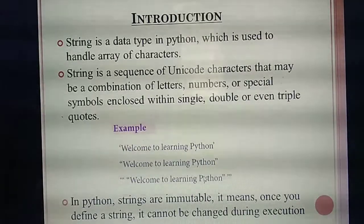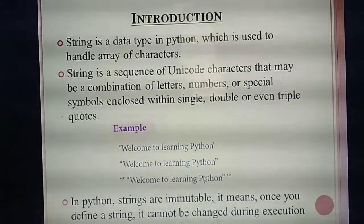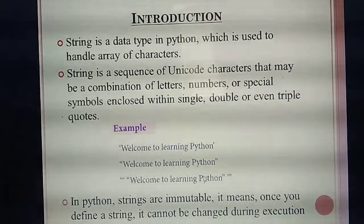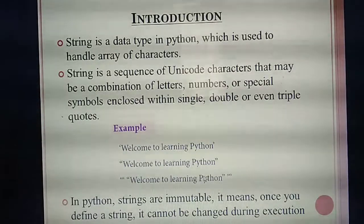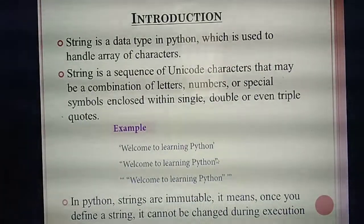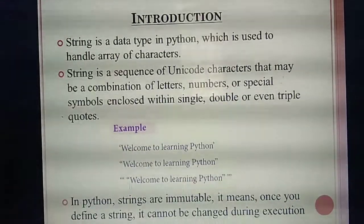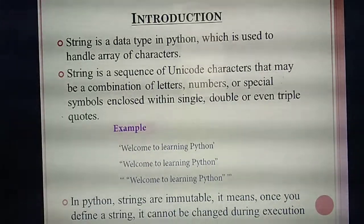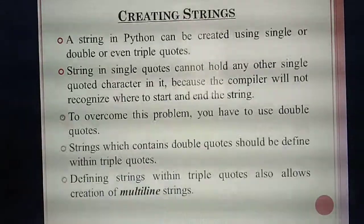A string is a collection of characters and will contain a combination of letters, numbers, or symbols. You should mention each thing inside quotes — single, double, or triple. First example: sentence in single quote. Second: in double quote. Third: in triple quote — the sentence inside triple quotes should be mentioned in double quotes. Next point: in Python you cannot change strings — that means strings are immutable.